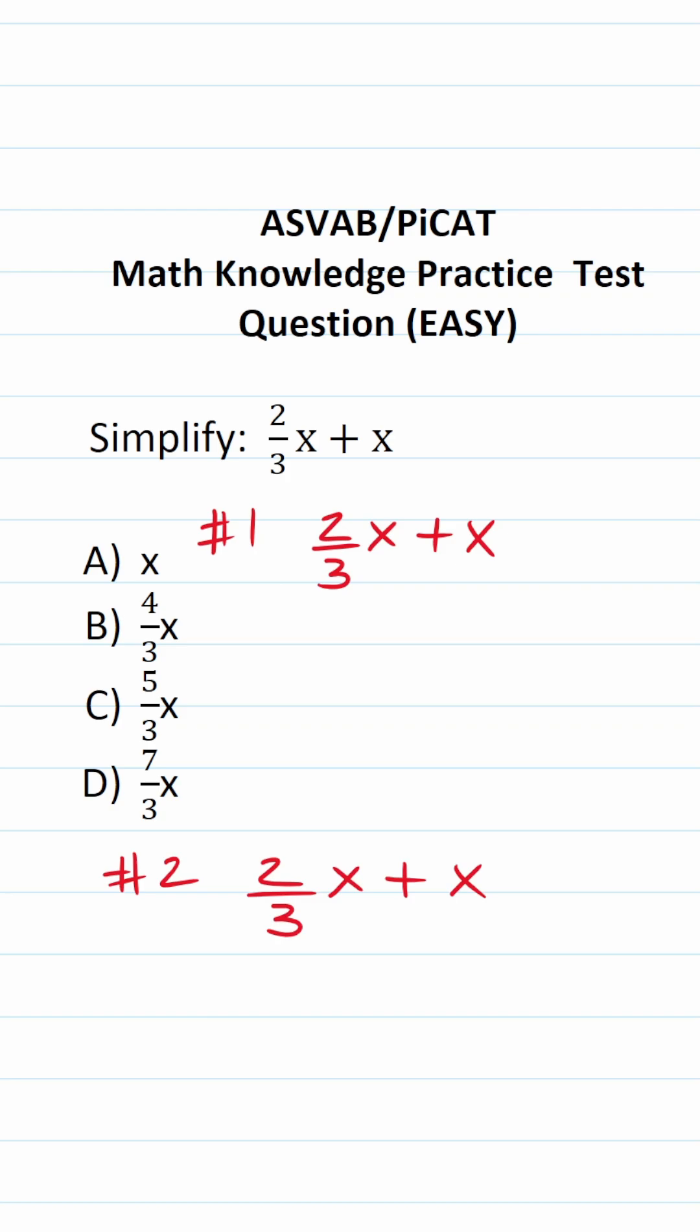The first way is to realize that there's a coefficient of one in front of this x. So in other words, you would read this as two-thirds plus one, which is going to be one and two-thirds x. When you look at our answer choices, however, you see that they're written as improper fractions.